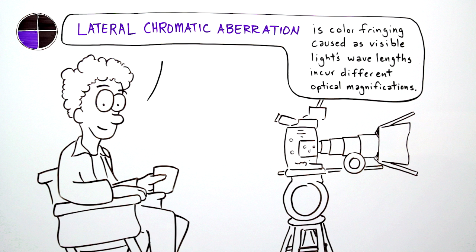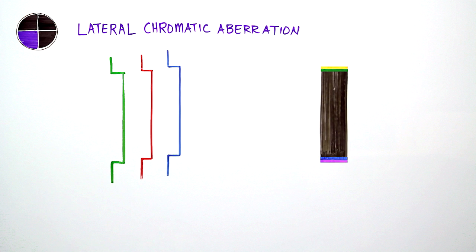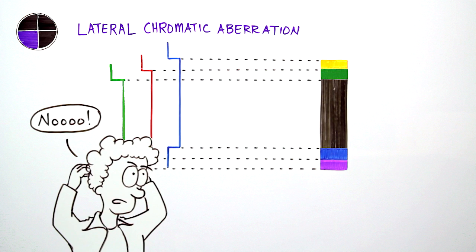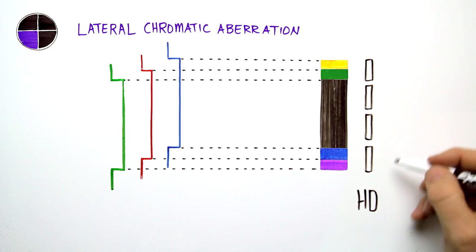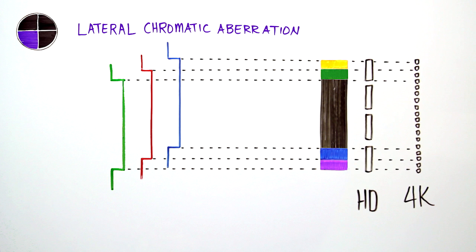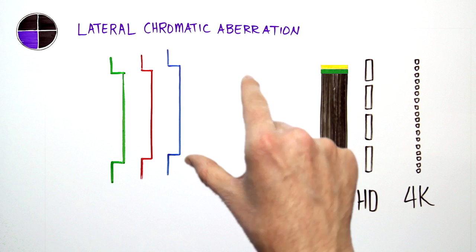The last benchmark is lateral chromatic aberration, or color fringing, caused as visible light's wavelengths incur different optical magnifications. It's the nemesis of a gorgeous image. 4K sensors make this color fringing more visible, so Canon uses highly advanced design technologies to bring the wavelengths back into line.